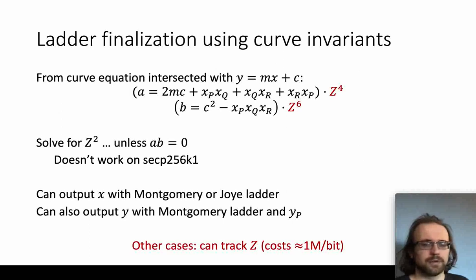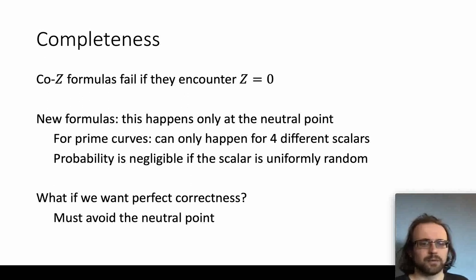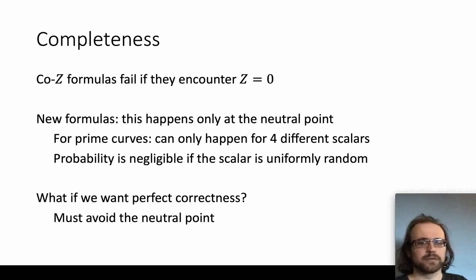In other cases, for example if you want to use the Joie ladder but also output the y coordinate, you can do this by tracking z — just add it to the ladder state and multiply it by something on every ladder step, costing one extra multiply per bit. Regarding whether these ladder formulas are complete or have failure cases: they're cozy formulas and therefore always fail if they encounter z equals zero, specifically the neutral point. The neutral point is the only way this can happen; they're otherwise complete. For prime curves, there are at most four different scalars for which you will see a failure, some of which are like scalar zero — those can't be salvaged anyway since the answer is the point at infinity.